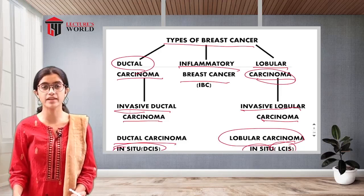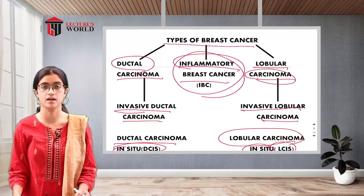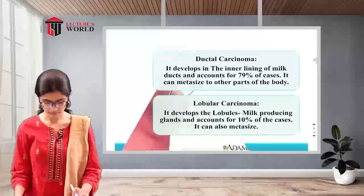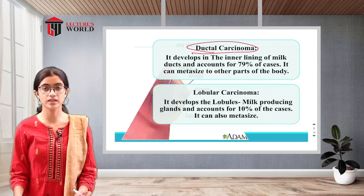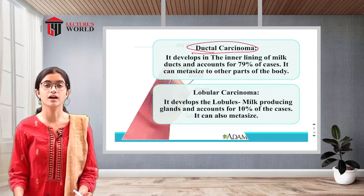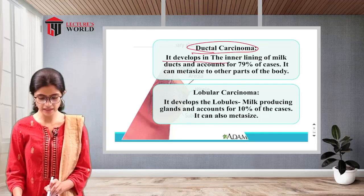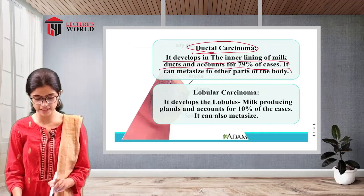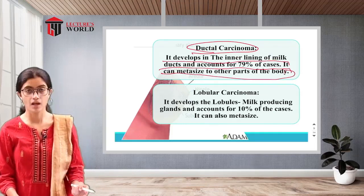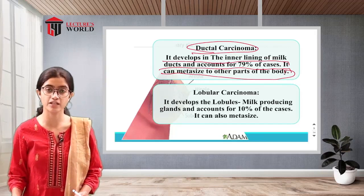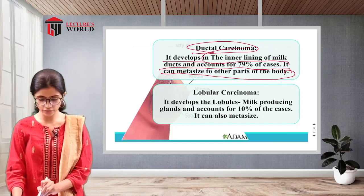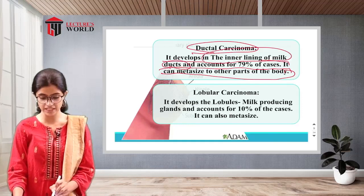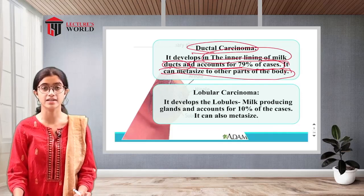There is also inflammatory breast cancer. Ductal carcinoma develops in the inner lining of milk ducts and accounts for 79% of cases. It can metastasize to other parts of the body. When cancer moves from its original place to other parts and metastasizes, it is at higher risk for causing trouble within the patient's body.